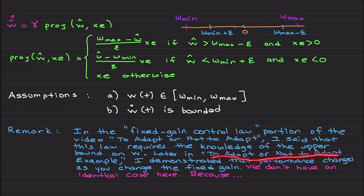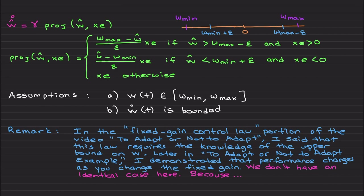You can be as conservative as possible. In the 'To Adapt or Not to Adapt' example, tuning the fixed-gain controller based on an upper bound caused performance changes with different selections. I will demonstrate that even if you choose these bounds conservatively — say your uncertainty is in a tight range but you choose minus ten to ten — your performance will not be affected. The projection operator keeps ŵ bounded, and if you don't know the precise min/max values, just use larger conservative values in the implementation.